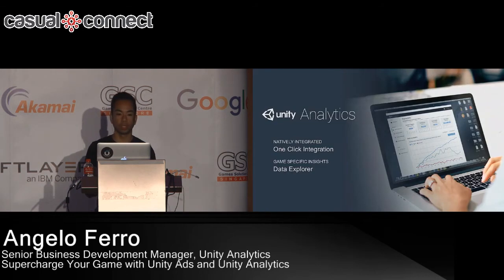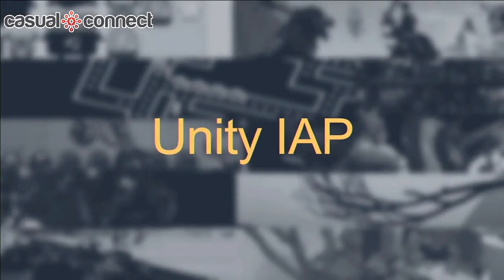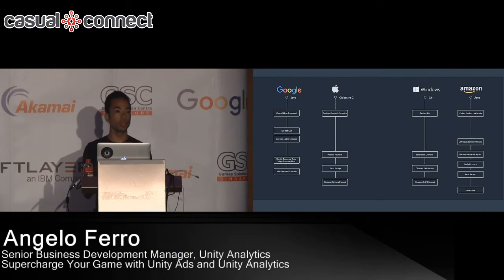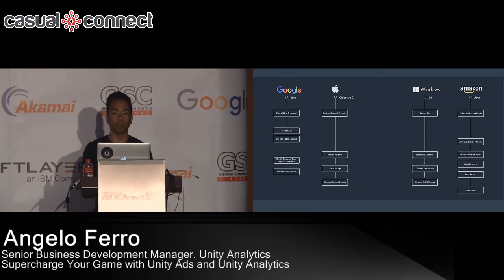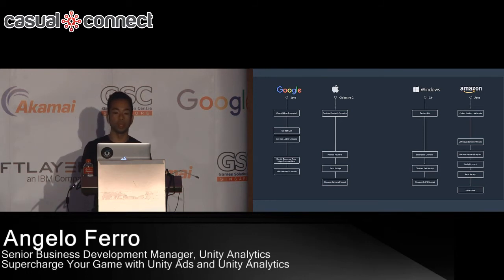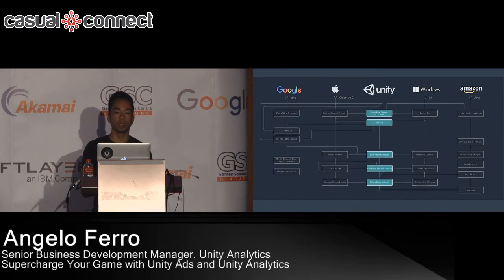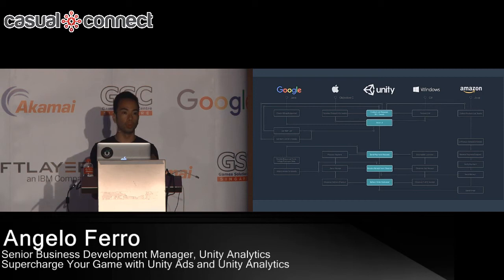The next service I want to touch on is called Unity IAP, launched in Unity 5.3. If you've ever set up IAP in your game before, you know you can't just set up your code and inventory for Google Play and then copy-paste it for the Apple Store or Windows Store. Just like the Unity Editor lets you write once and deploy to multiple stores, you can do the same with Unity IAP — set up your transactions once and build to Google Play, Apple Store, Windows Store, and Amazon Store.